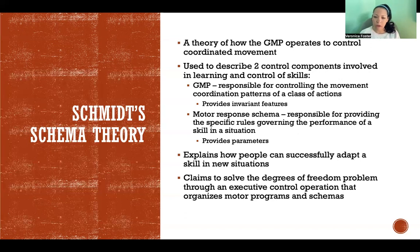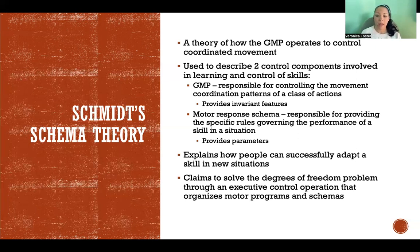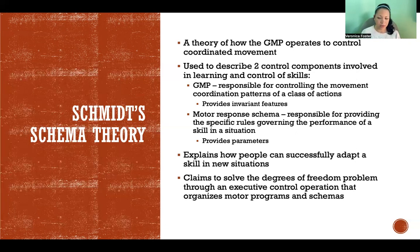This theory claims to solve the degrees of freedom problem through an executive control operation that organizes motor programs and schemas. Essentially, we solve the degrees of freedom problem by having motor programs that we develop over time to call upon when we need to perform a certain movement. In that case, we don't have all of these many degrees of freedom that we need to manage and control — instead, we have a plan and we execute that plan without having any control issues.